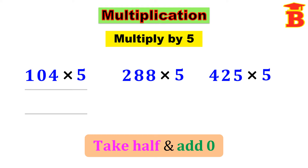Now using this technique we can multiply numbers very easily. Take half of 104, that is 52, and then add 0 at the back. Therefore the answer is 520.